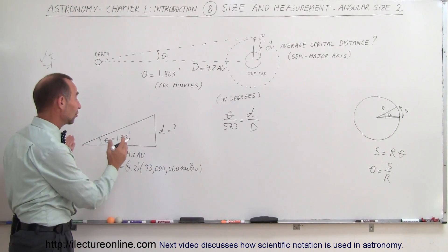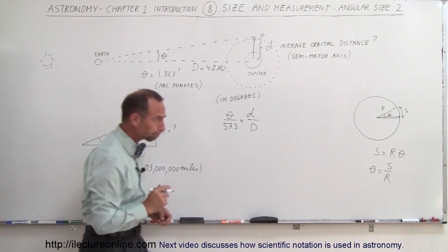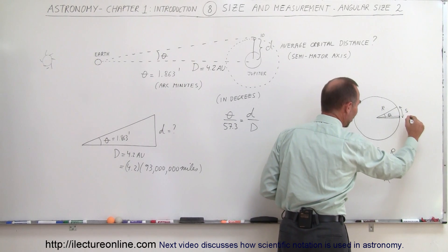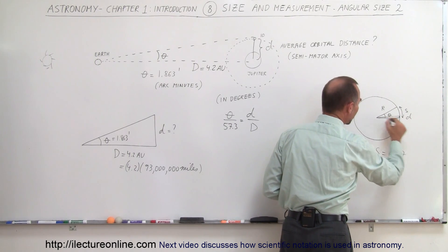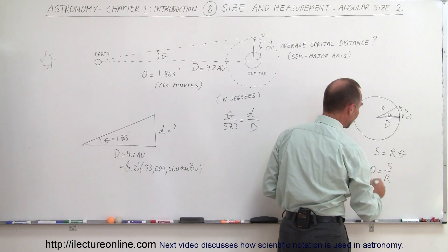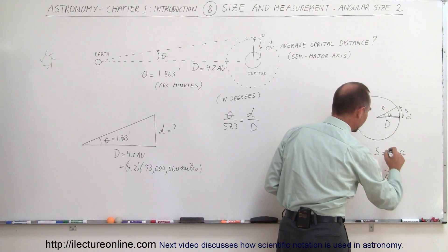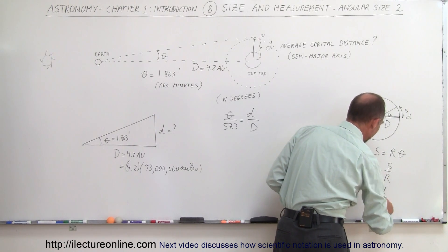And remember, in astronomy, we always talk about very small angles. So this small angle, we can then say that this distance, we call this little d, and we call the radius big D. We can then say that the angle theta is equal to the ratio of small d divided by big D.